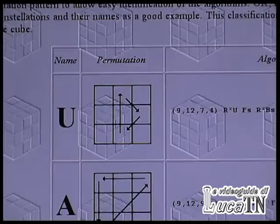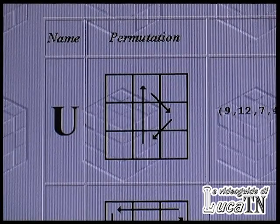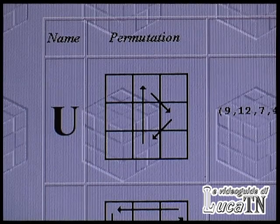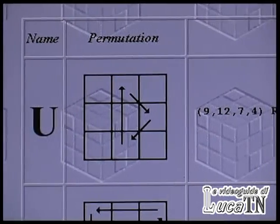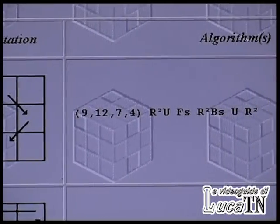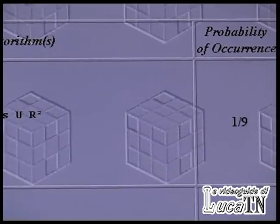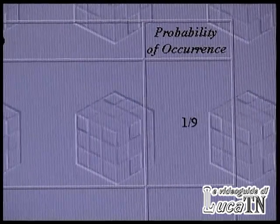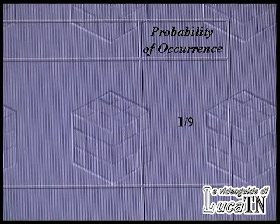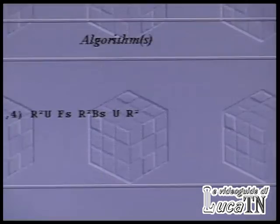The first one is named the U case. This situation occurs when you have to move the three edges in this way. We have the number of moves in different notations, the algorithm itself, and the probability of occurrence: one time each nine times — meaning if we rebuild the cube nine times, one time we will find ourselves in this situation.